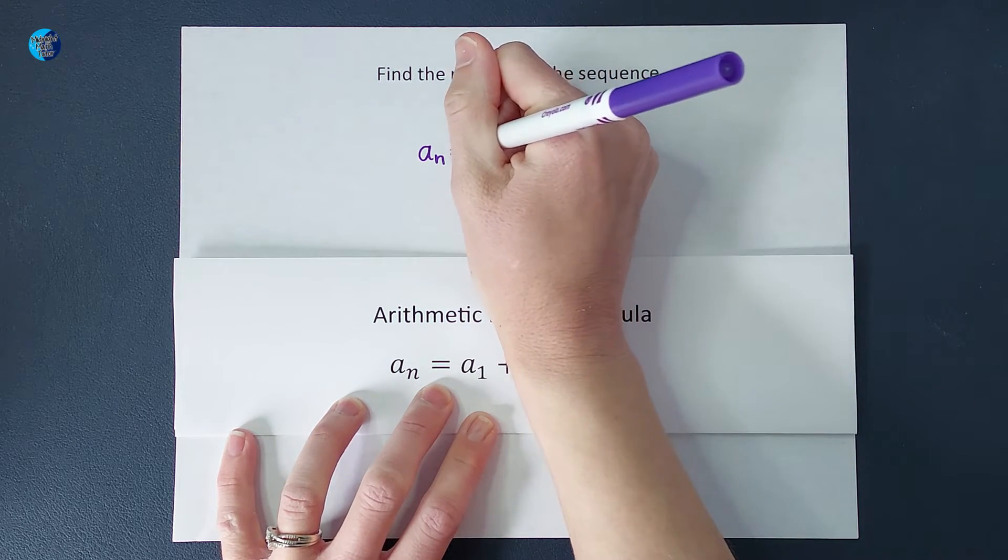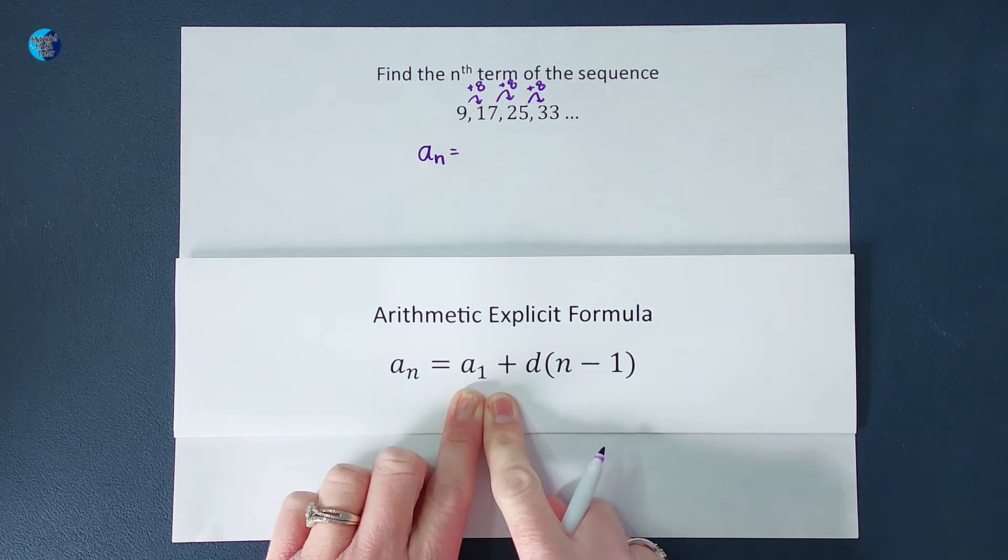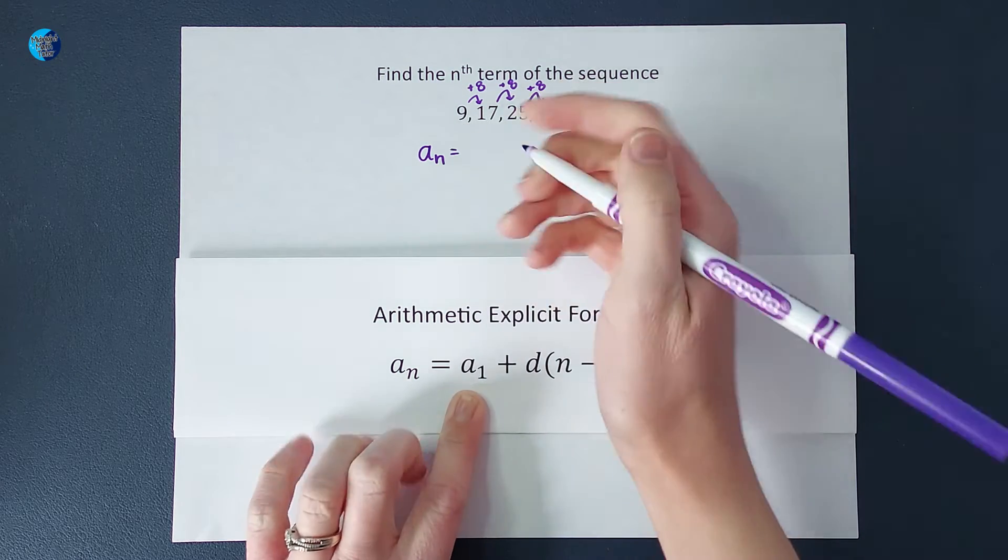What do you do? You take the first number of the sequence, a sub 1, which in this case is 9.